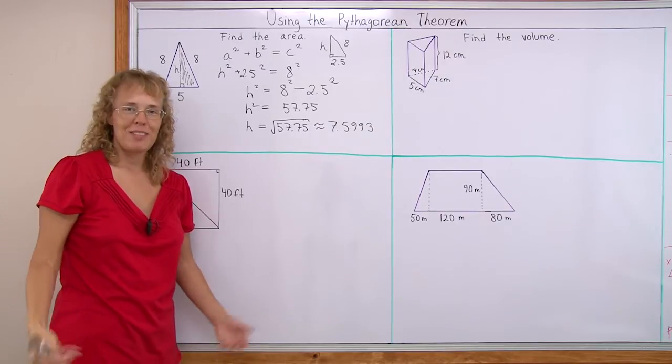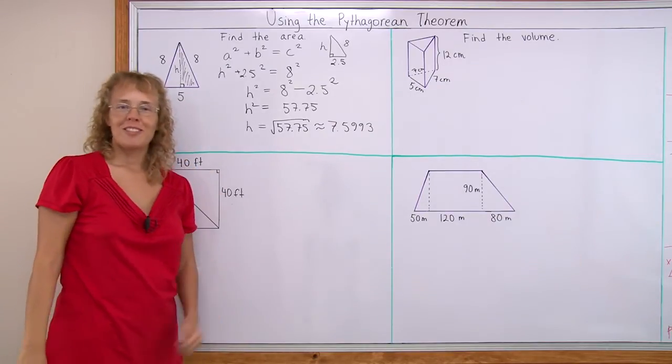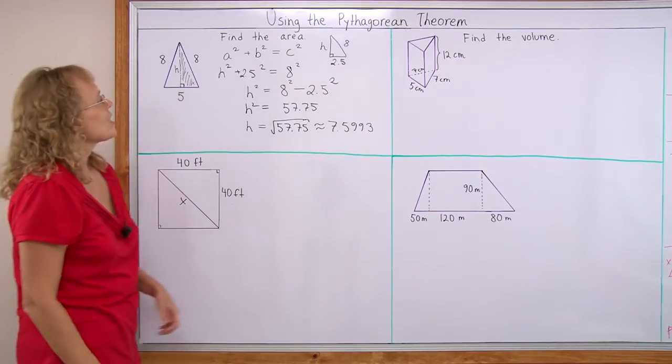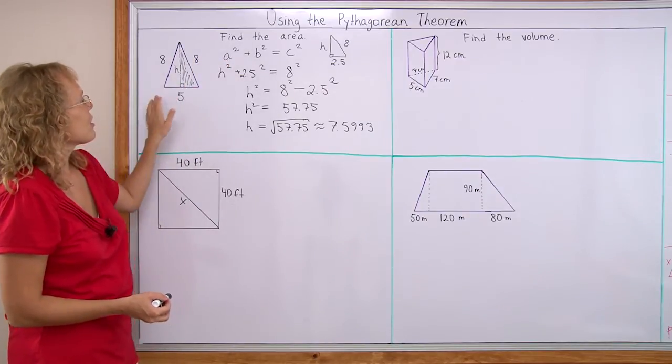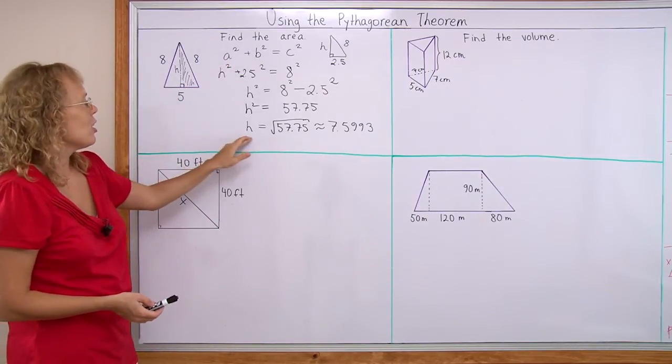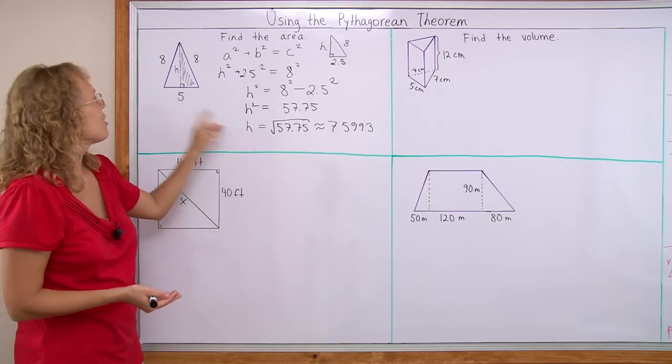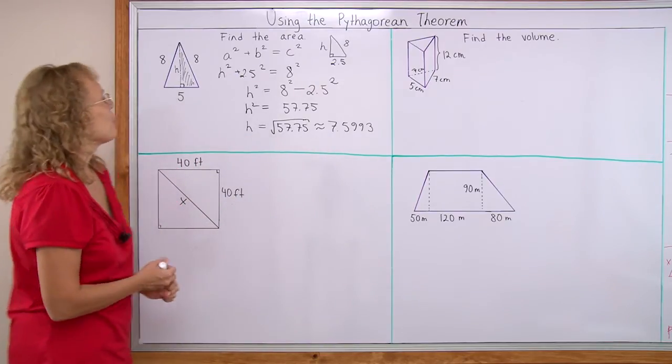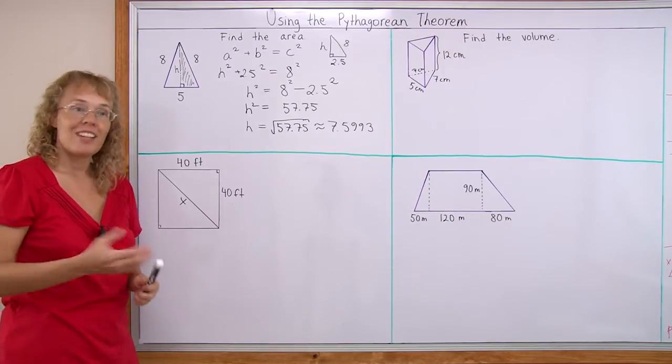Are we done? Is the problem solved? Let's check what it was asking. Find the area of this triangle, right? All I did thus far was to find the height of the triangle. Now we actually can get to calculating the area.